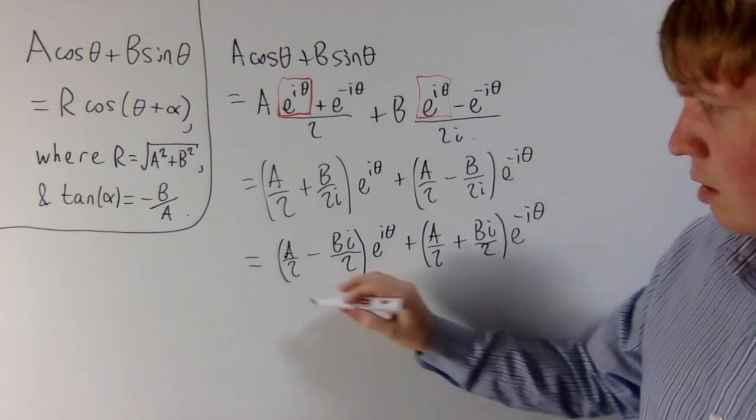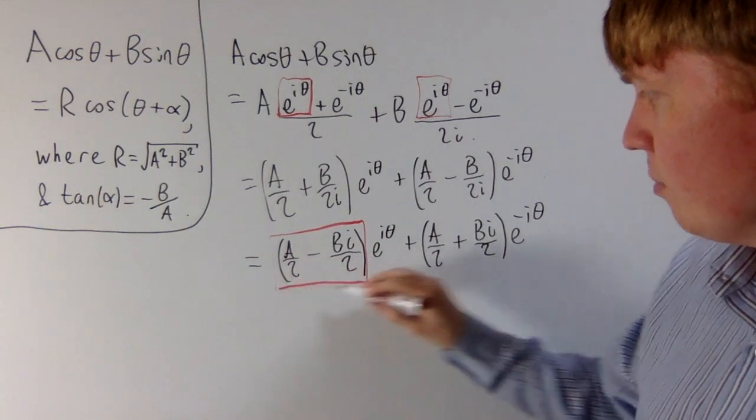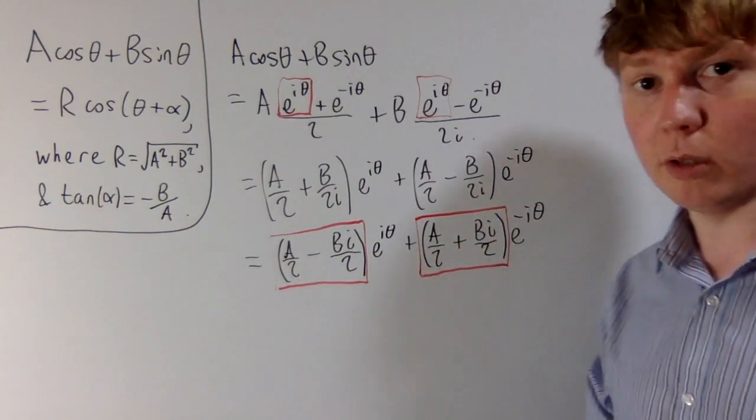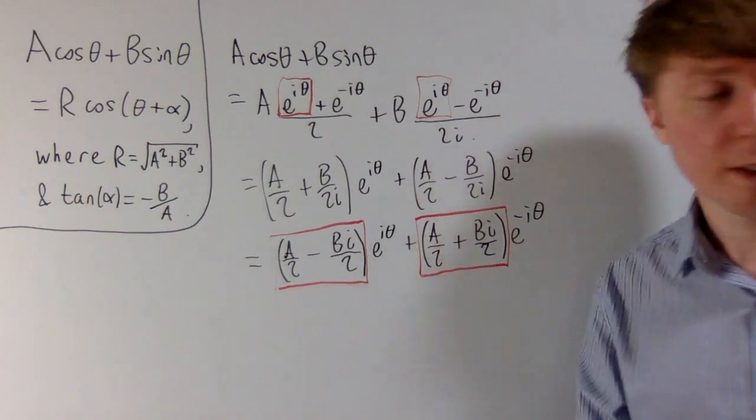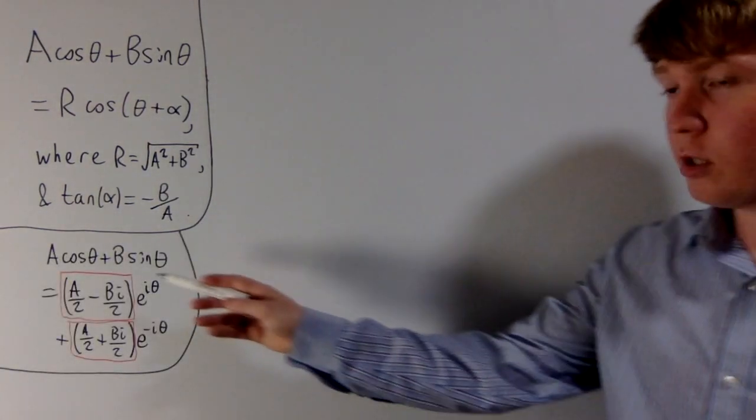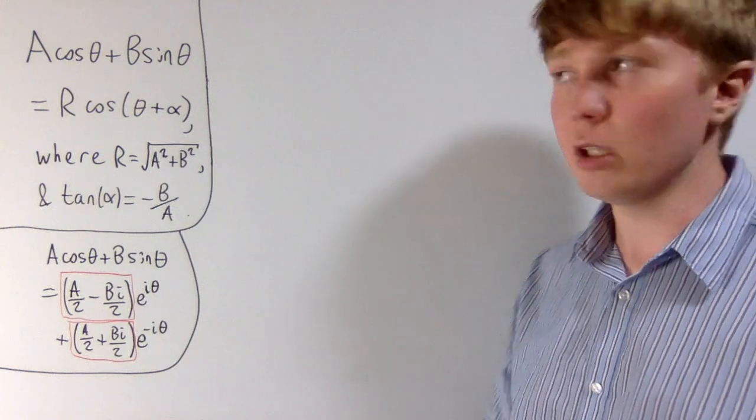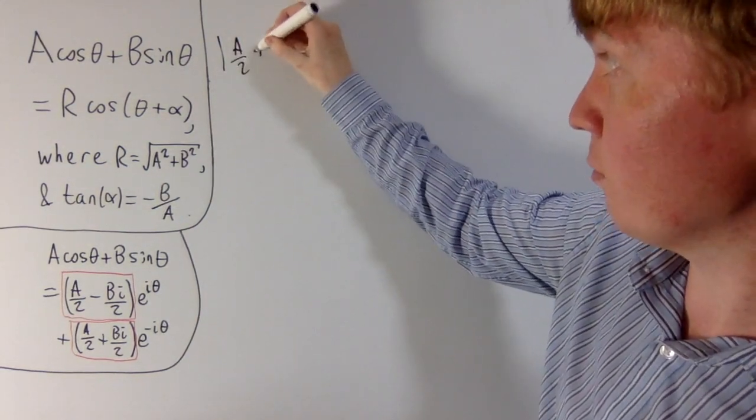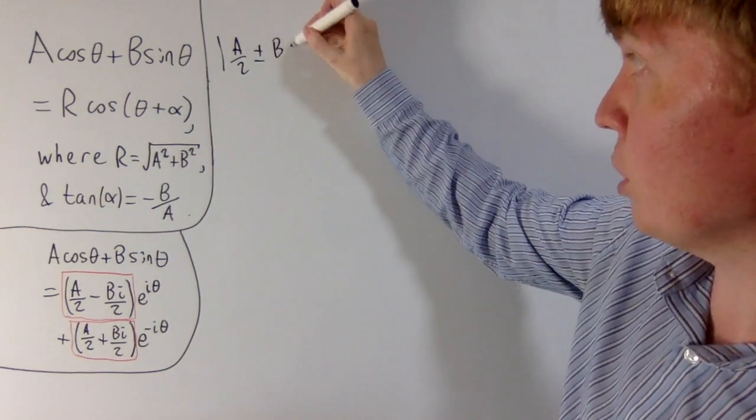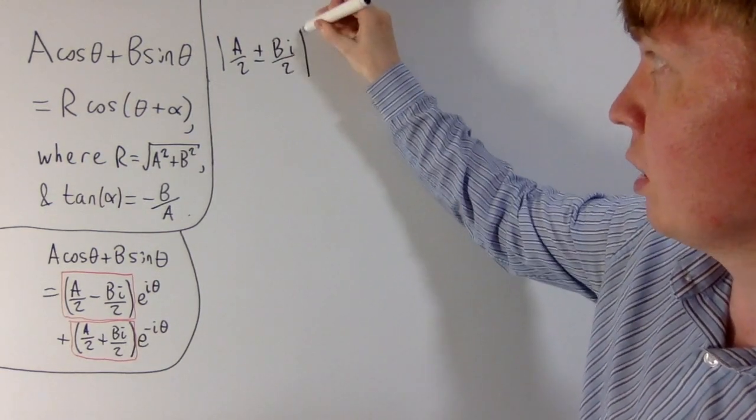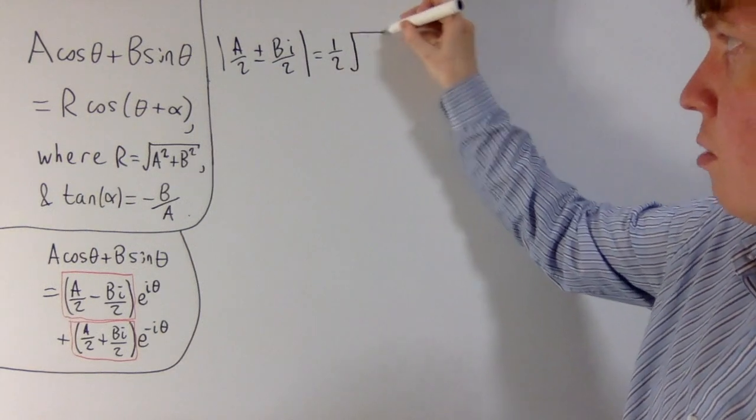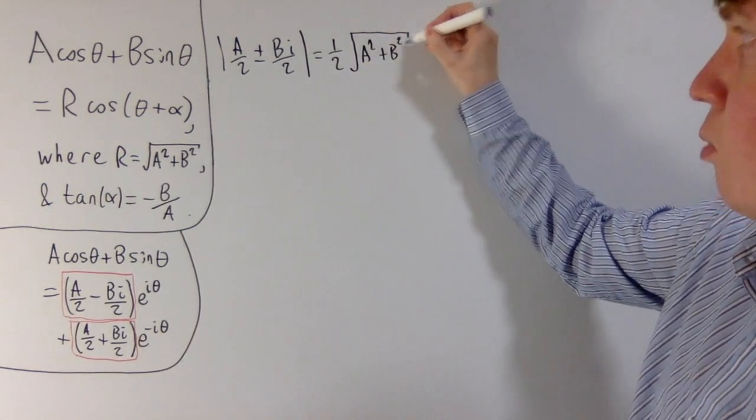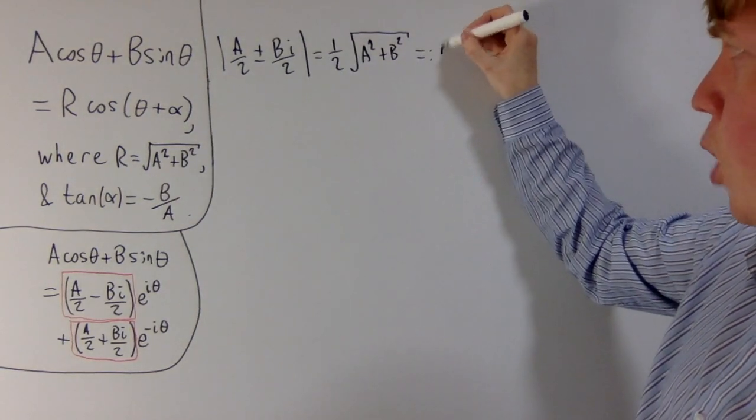What we'll do next is have a look at these coefficients. These are now some complex numbers expressed in terms of A and B. We'll convert these to polar form. To convert these two complex numbers into polar form, we need to find their modulus and their argument. The modulus is nice because it's actually the same for each of these, the modulus of A over 2 plus or minus B i over 2. With a little bit of work with Pythagoras' theorem here, you can show this is equal to a half times the square root of A squared plus B squared. We'll call this equal to R over 2.